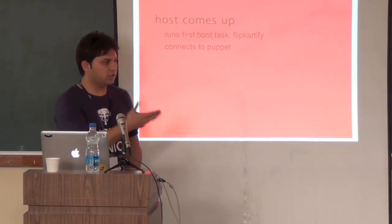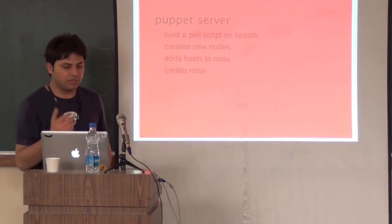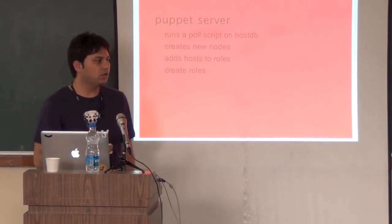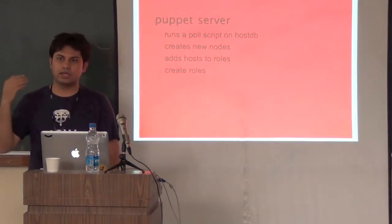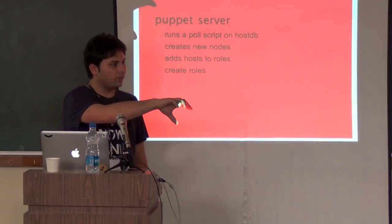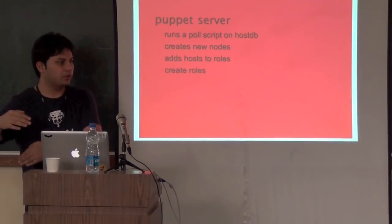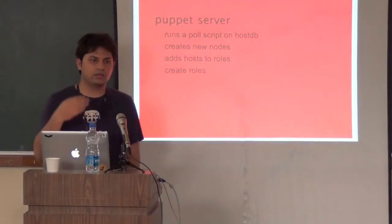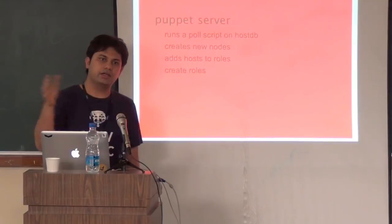When a host comes up it runs the task and connects to Puppet. The Puppet server also runs a poll on the host DB to find new nodes, adds hosts to roles, and creates new ones. You can create a role and put it into the host DB, then pull it out from the Puppet server and push it into Puppet — users can create their own roles inside Puppet without ever editing Puppet files directly.